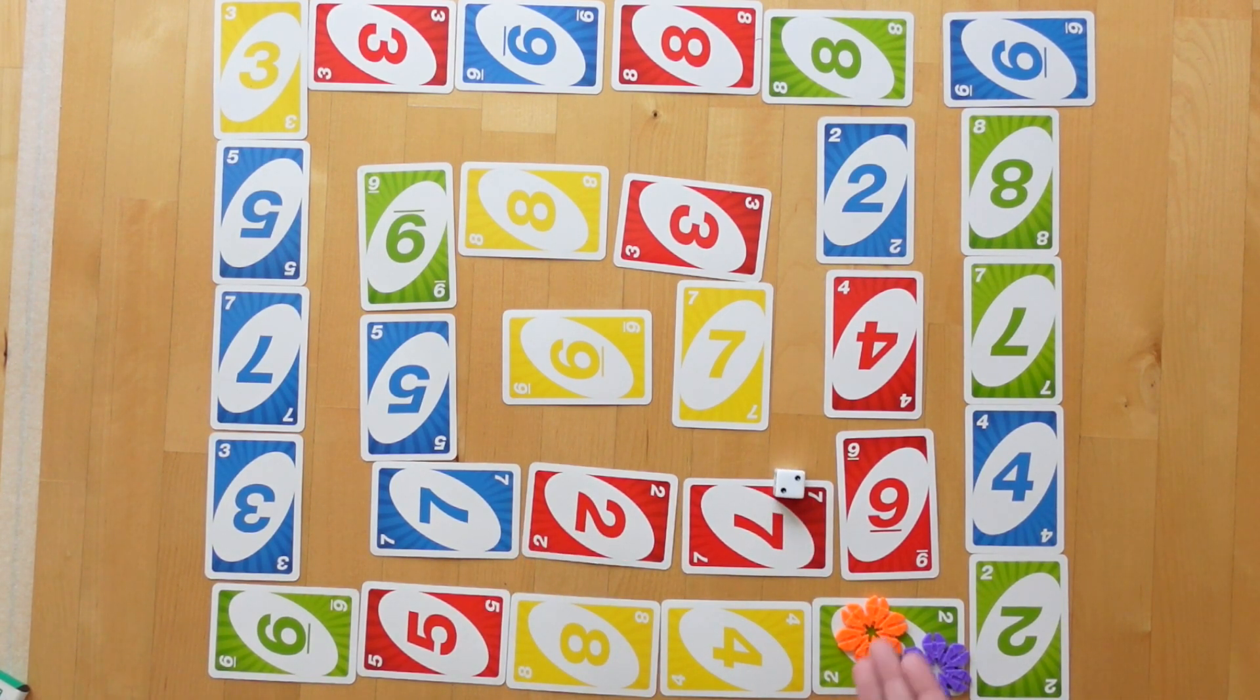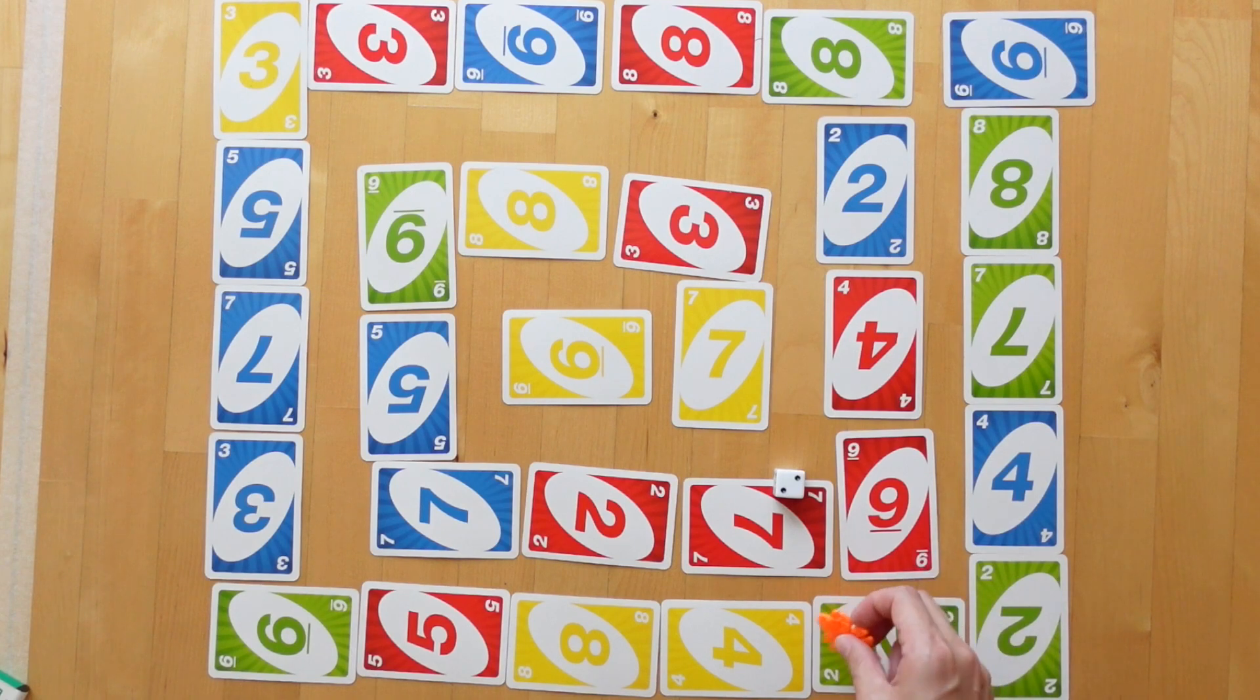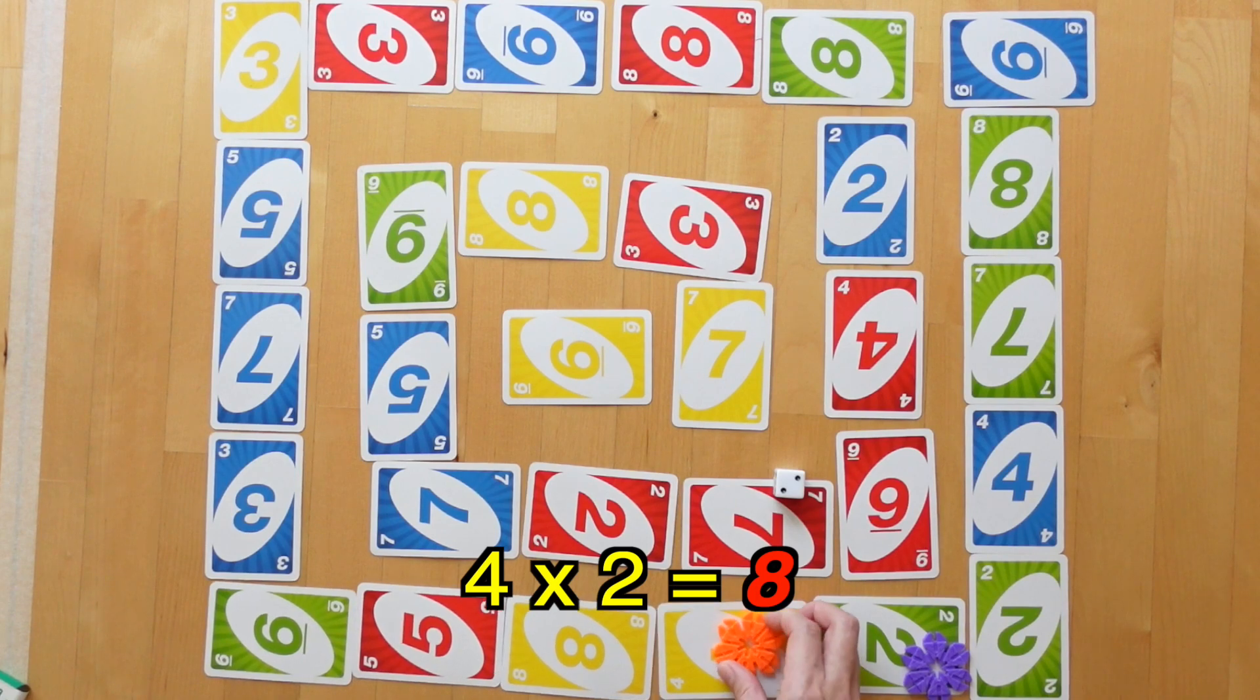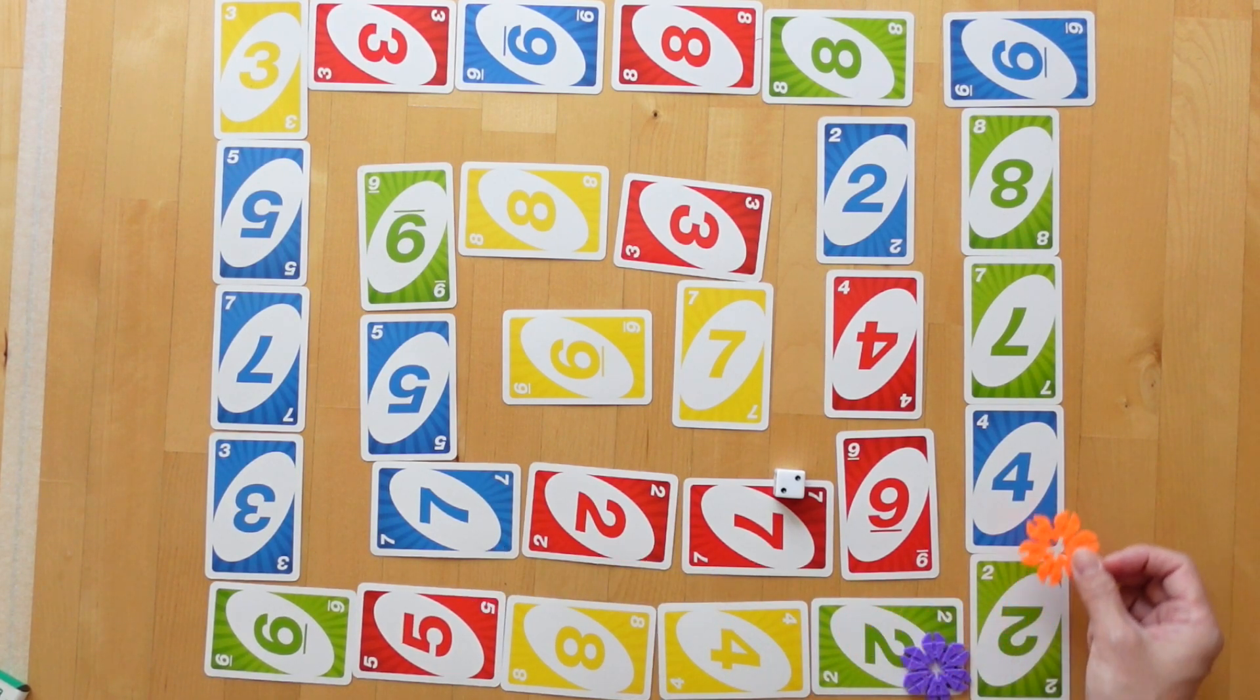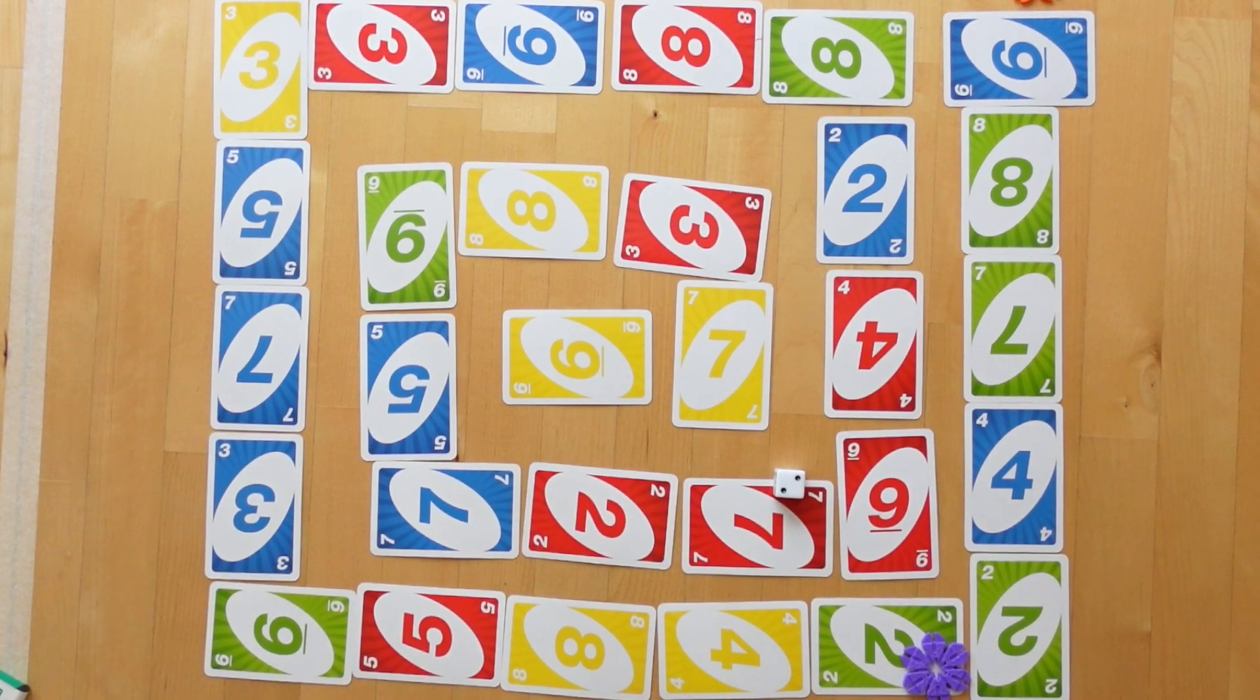Now it's orange player's turn. Orange has rolled a 2. 4 times 2 is 8. 2 times 2 is 4. So she's going to outrun the 4. 4 times 2 is 8, and move up 8 spaces. 1, 2, 3, 4, 5, 6, 7, 8. And she has escaped the dungeon first.